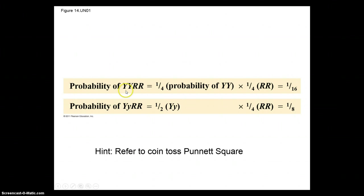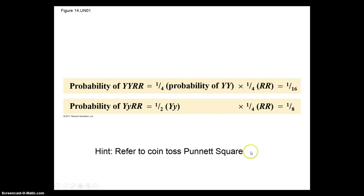A dihybrid or multi-character cross is equivalent to two or more independent monohybrid crosses occurring simultaneously. You can calculate the chances for various genotypes by considering each character separately and then multiplying the individual probabilities. Going back to our yellow round seed example: there is a one in four probability of getting YY (one-half times one-half), and a one in four probability of getting RR. Multiplying one-quarter by one-quarter gives you one-sixteenth.